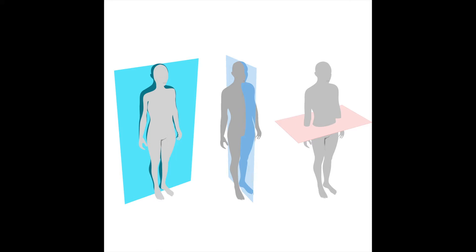Let's begin with the frontal plane. The image on the far left separates the body into front and back. The joint actions you can do within this plane are abduction and adduction. The sagittal plane, shown in the middle picture, separates the body into left and right, and the joint actions available are flexion and extension. The transverse plane, shown on the right, separates the body into up and down sections, and the joint action available is rotation.